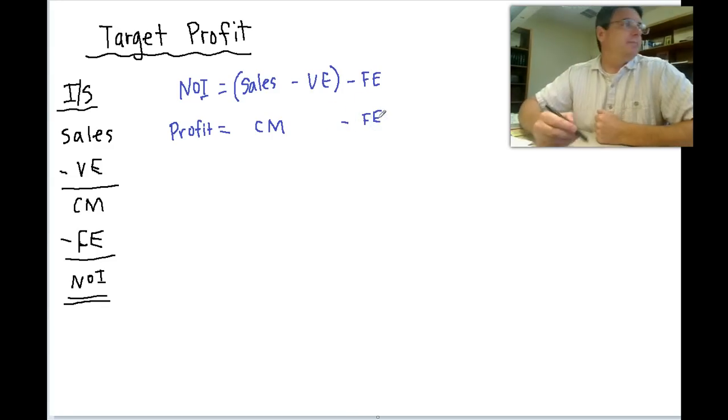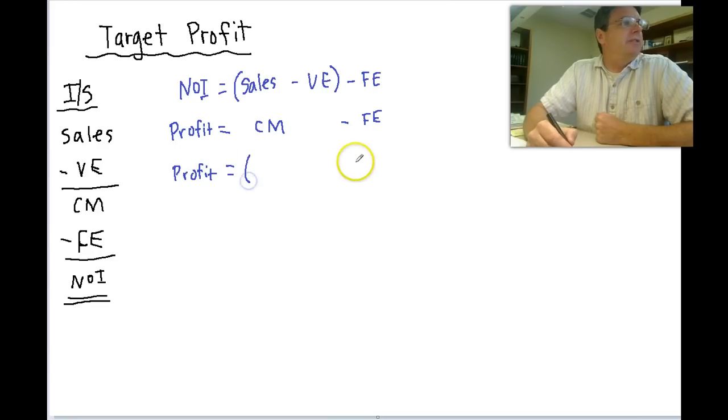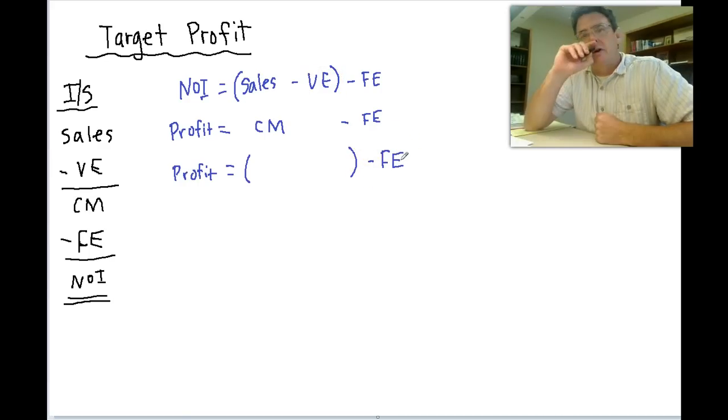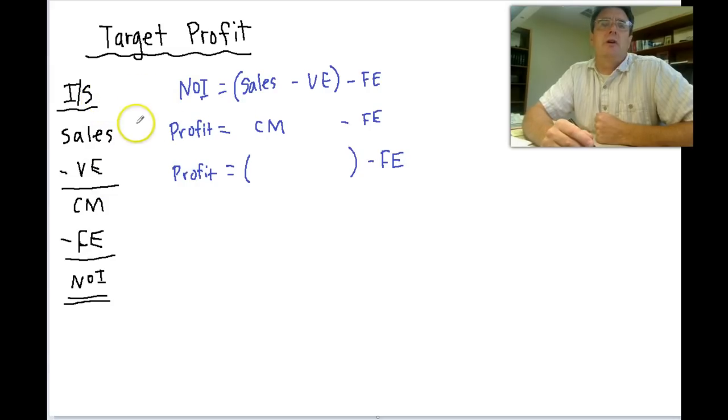One more step now. Let's take our contribution margin and expand it back out. But this time, let's not do it sales minus variable expenses. Let's do it another way. Remember in our contribution format income statement, I've been adding additional columns, a per unit column and a ratio or percentage column.